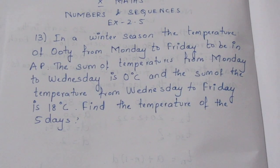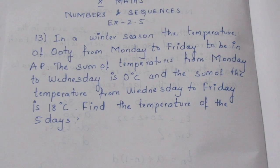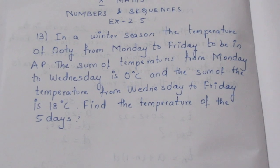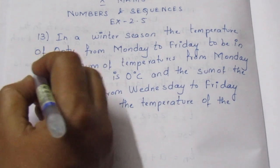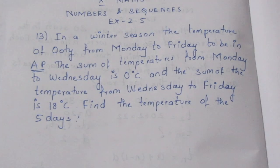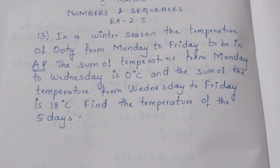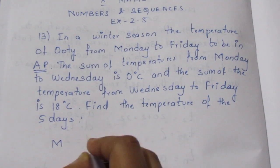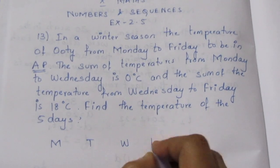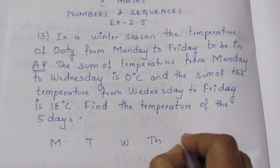In a winter season, the temperature of Ooty from Monday to Friday — that is, the temperature from Monday to Friday — is said to be in an AP (Arithmetic Progression). So Monday, Tuesday, Wednesday, Thursday, Friday are the five terms.